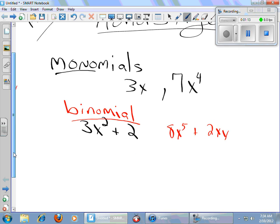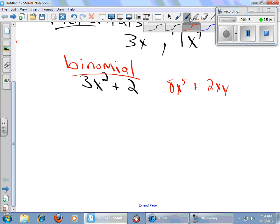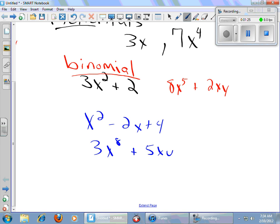All right, you guess. I bet you can guess what will happen next. We have things like x squared minus 2x plus 4, or possibly 3x to the 8th plus 5xy minus 6y to the 4th. I'll bet you can guess. These are called trinomials. Trinomials.